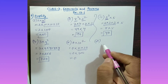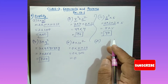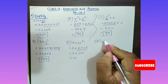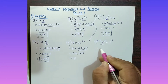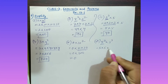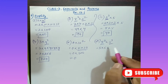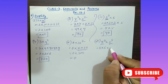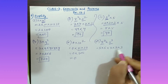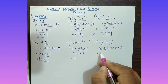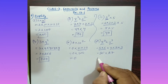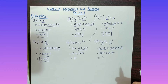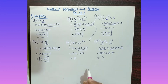Part (vi): Simplify 5 square into 3 cube. Five squared means 5 is multiplied 2 times: 5 into 5, which is 25. Three cubed means 3 is multiplied 3 times: 3 into 3 into 3, which is 27. So multiply 25 into 27 to find the answer.